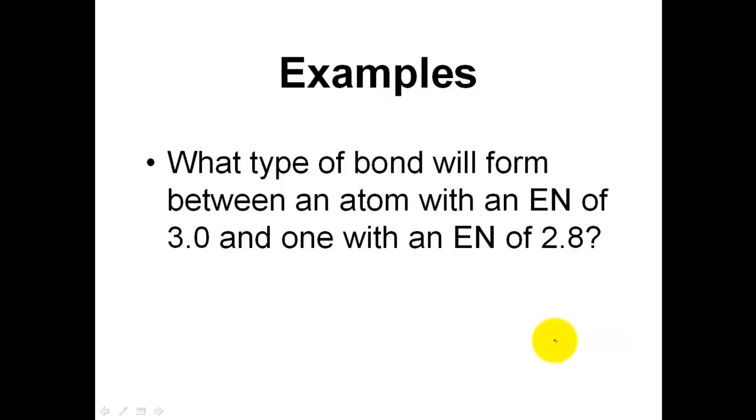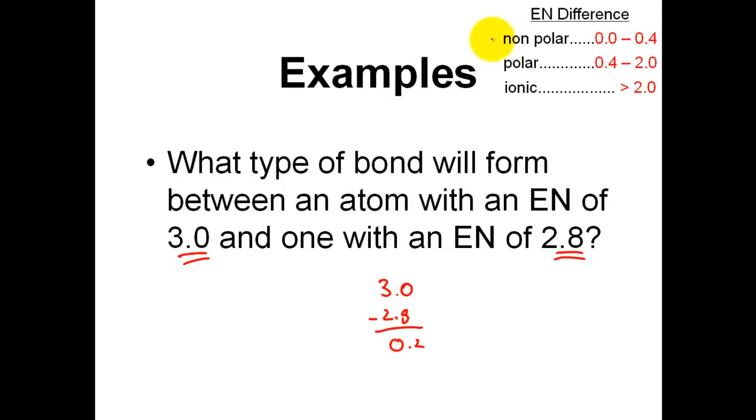And the last example, what type of bond will form between an atom with an electronegativity value of 3.0, and a different one of 2.8. Let's take the larger, 3.0 minus 2.8, and I end up with a 0.2 difference. 0.2 difference classifies this as a non-polar covalent compound. Once again, it all comes down to electronegativity. I think we've met the objectives here, and have a good day, and I hope this was helpful.